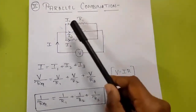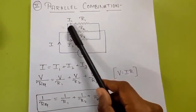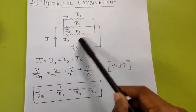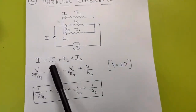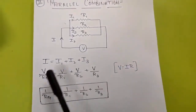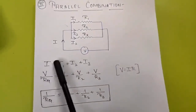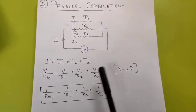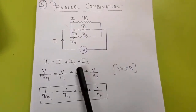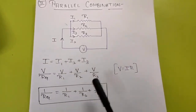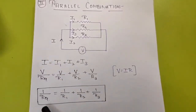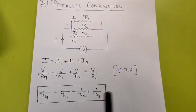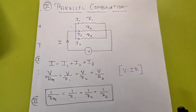If total current I is flowing, and I1 flows through the first branch, I2 through the second branch, and I3 through the third branch, then I equals I1 plus I2 plus I3. From Ohm's law, V equals IR, so I equals V over R_equivalent, which equals V over R1 plus V over R2 plus V over R3, because the potential across all resistances is the same. Dividing through by V, we get 1 over R_equivalent equals 1 over R1 plus 1 over R2 plus 1 over R3. This is the equivalent resistance in a parallel combination.